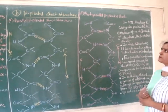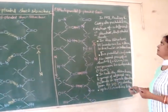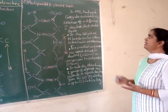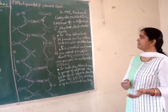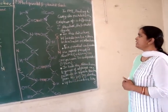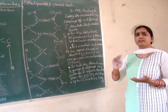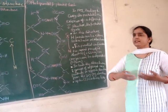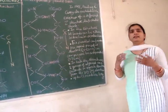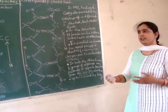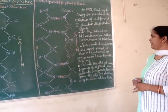The second type of secondary structure is the beta-pleated sheet structure, also proposed by Pauling and Corey in 1951. They postulated the existence of this extended structure. In beta-pleated sheets, hydrogen bonds can be either intra-chain — within the same polypeptide chain — or inter-chain — between two different polypeptide chains.